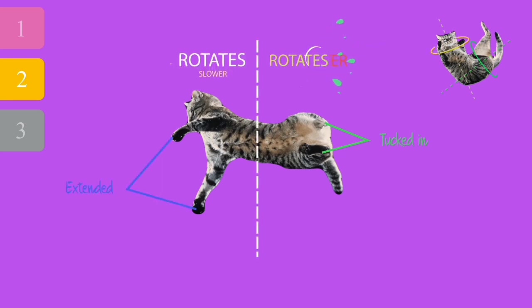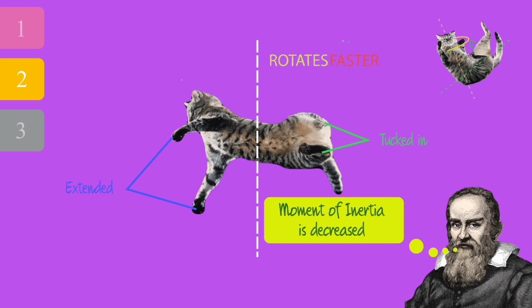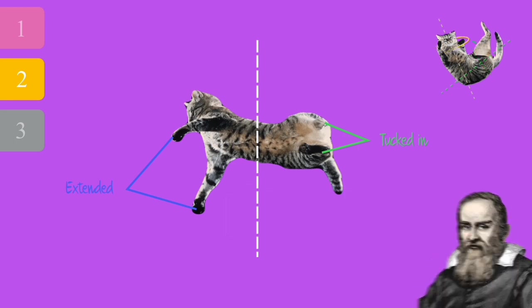Next, cats tuck in their hind legs and extend their forelegs. What this simple trick does is it makes the rear half of their body rotate faster than the front half. Tucking in the hind leg increases the speed of rotation because it reduces what scientists call its moment of inertia. By the end of this stage, the rear part of their body should be facing the ground the right way.